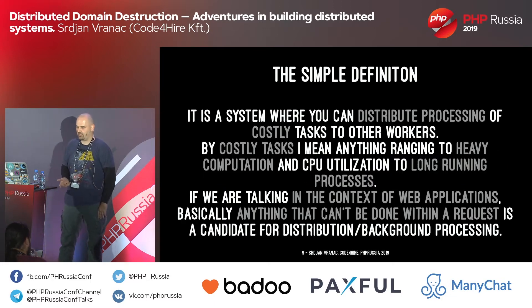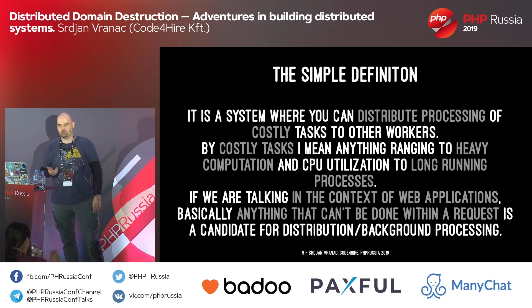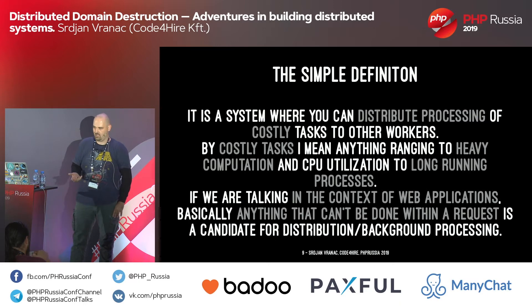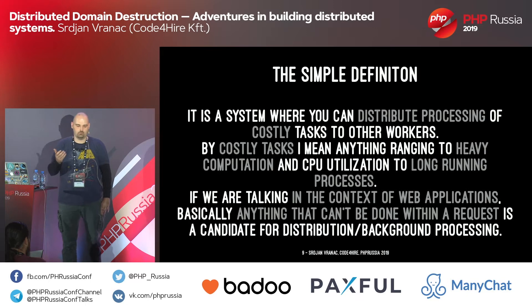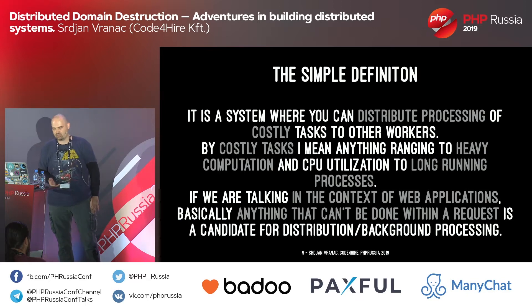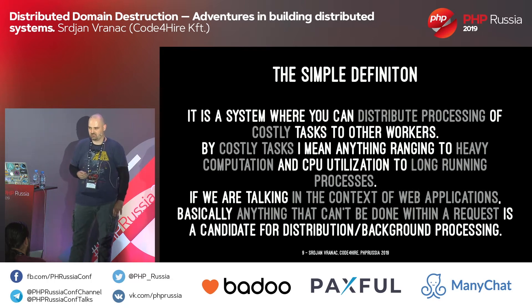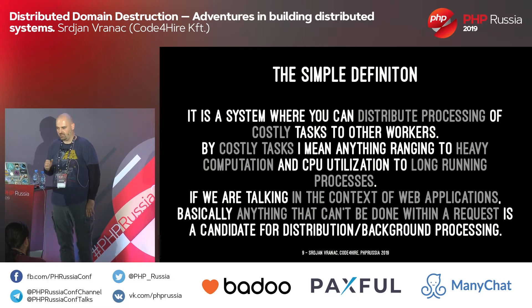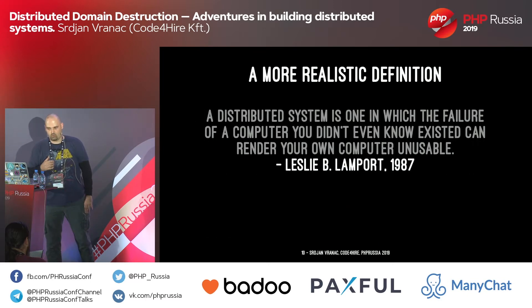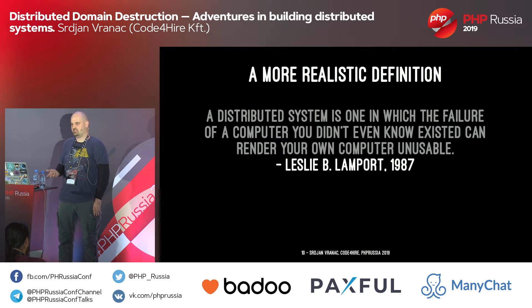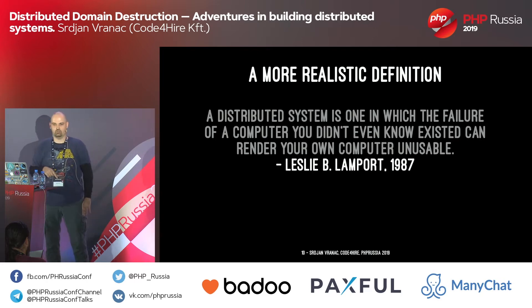The simple definition is that it is a system where you distribute processing of tasks to other workers. By tasks, I mean costly tasks — anything ranging from heavy computation and CPU utilization to long-running processes. In the context of web applications, basically anything that can't be done within a request is a good candidate for distribution and background processing. A more realistic definition is that a distributed system is one in which the failure of a computer you didn't even know existed rendered your own computer unusable.